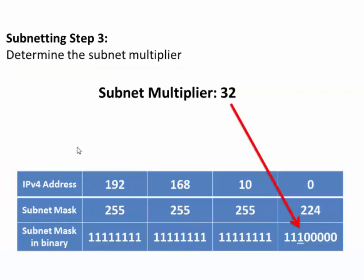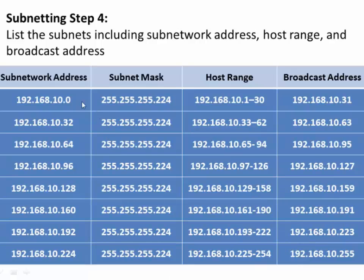Notice that we borrowed three bits from the host portion — these are our subnet bits. Since we borrowed three bits, we created 2×2×2 subnets, or 2 to the third power, which is 8 subnets. You can count them: 1, 2, 3, 4, 5, 6, 7, 8 subnets. This is an efficient way to subnet a network given a set of requirements.